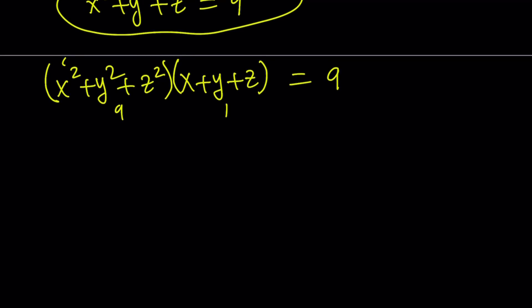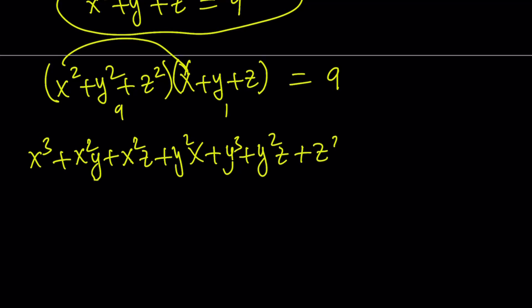We're going to get 9 terms, but we can go ahead and expand this completely, and then I'll arrange the terms. So I get x cubed plus x squared y plus x squared z, and then y squared x plus y cubed plus y squared z. And then, finally, z squared x plus z squared y plus z cubed, and it's equal to 9. Great.